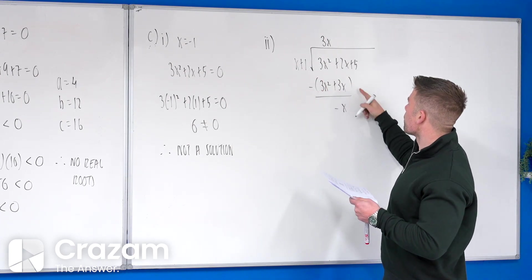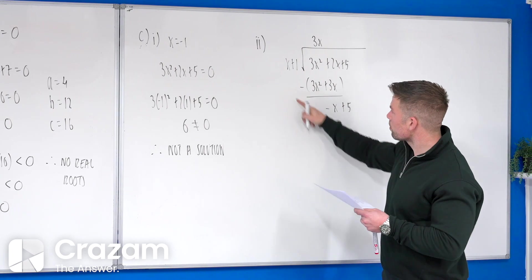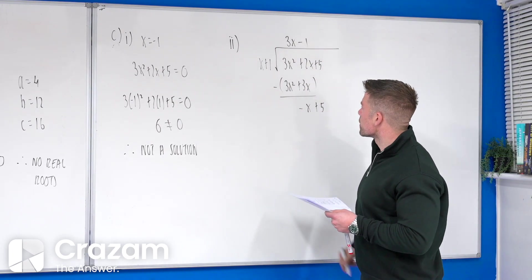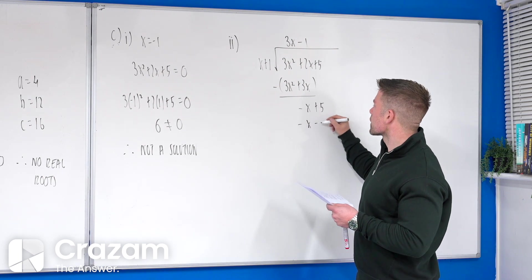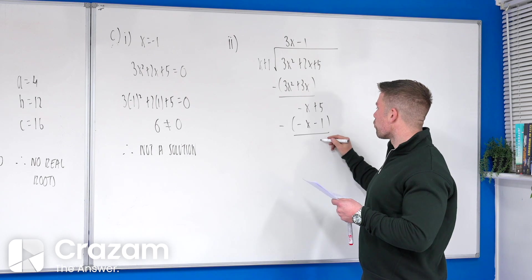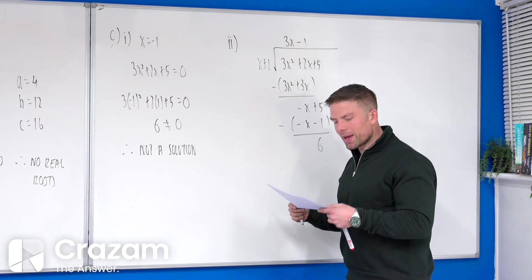Subtract that. We get minus x plus 5. x into minus x gives me minus 1. We get minus x minus 1. Subtract that. And overall, we get 6.